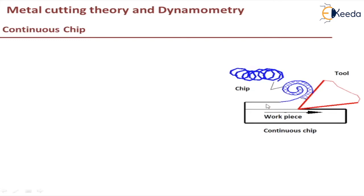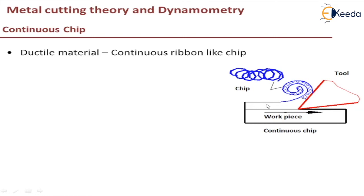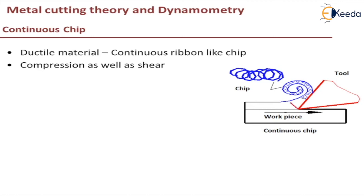Continuous chip formation happens when we machine ductile materials like low carbon steel, copper, brass, and aluminium alloys — a continuous ribbon-type chip is formed. The pressure of the tool plastically deforms the material ahead of the cutting edge in both compression and shear. Ahead of the cutting edge there is a compression zone, and then the shear plane where shearing is taking place.